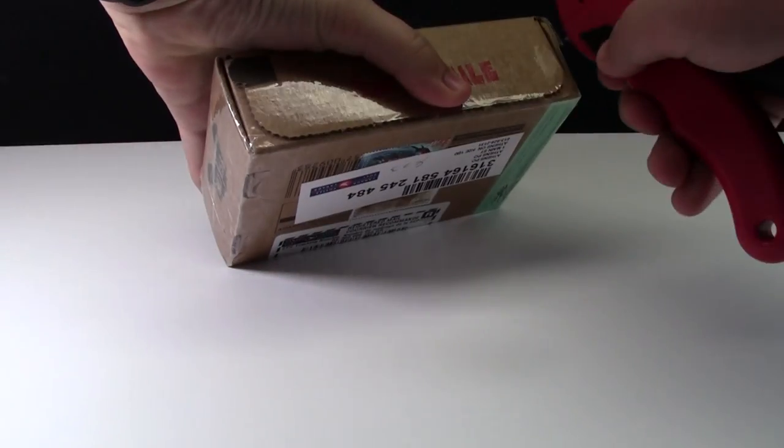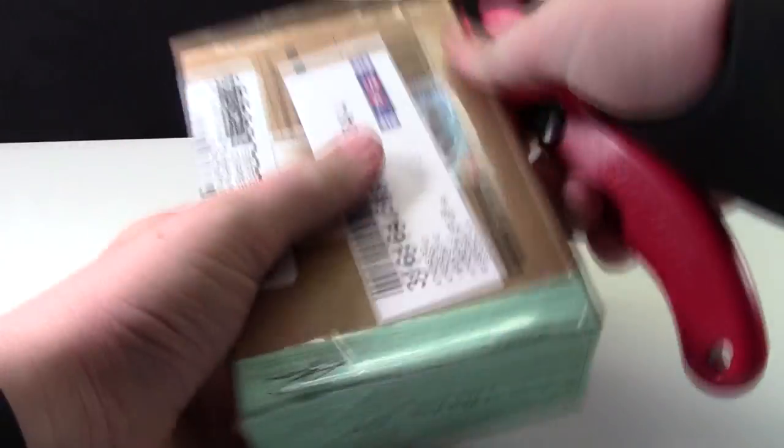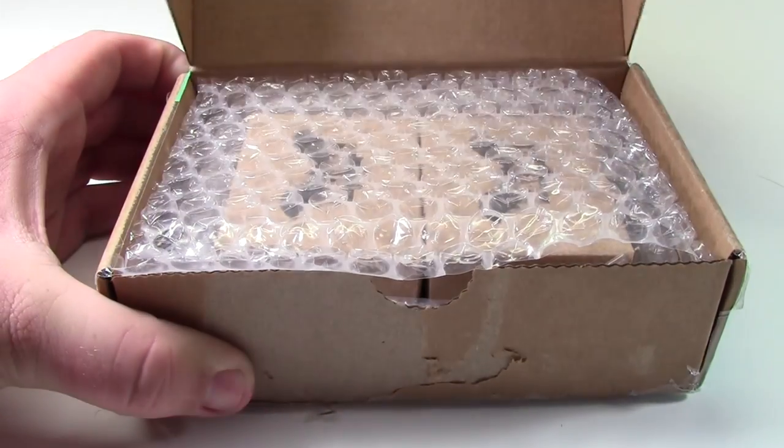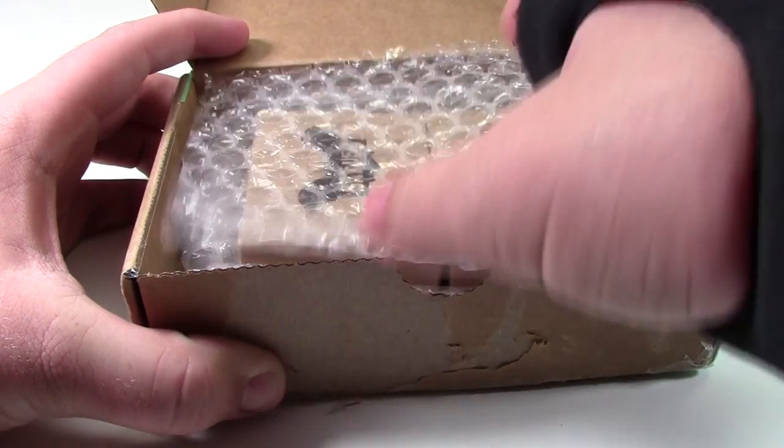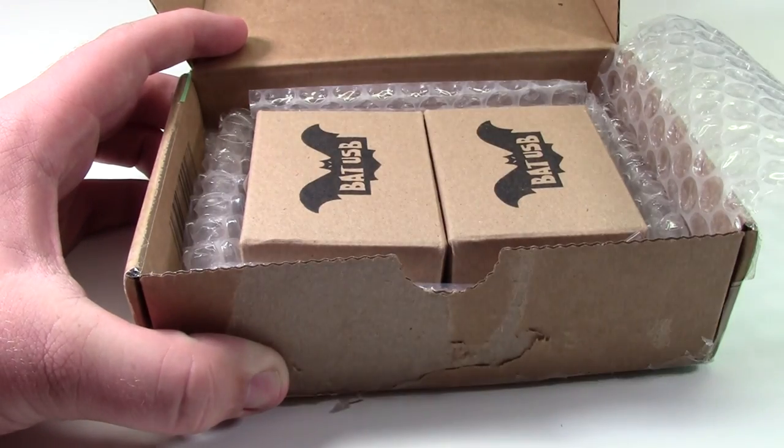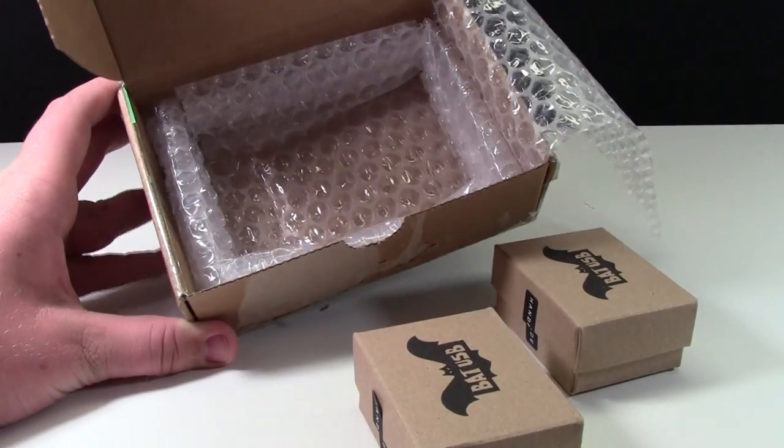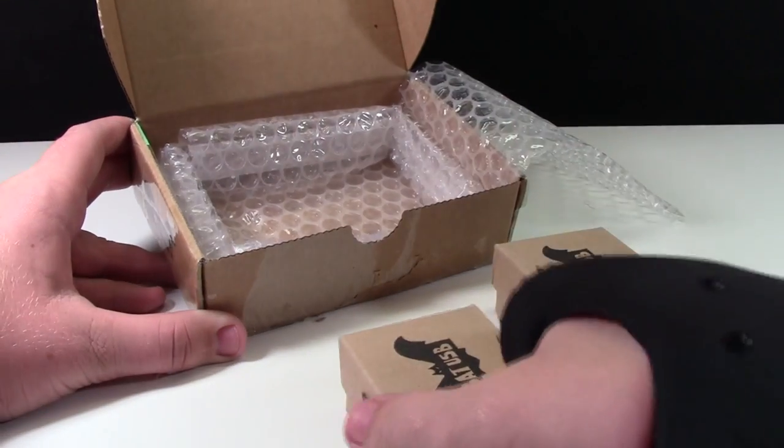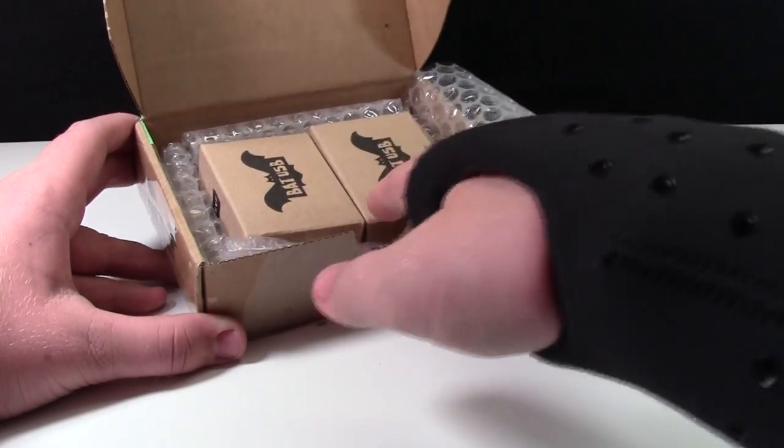So now I'm going to open it up. As you can see when we open it up we have the bubble wrap containing two BatUSB boxes. We'll take each box out individually and this little thing of bubble wrap they've made so that the box fits in there absolutely perfectly and they don't shift around when shipping.